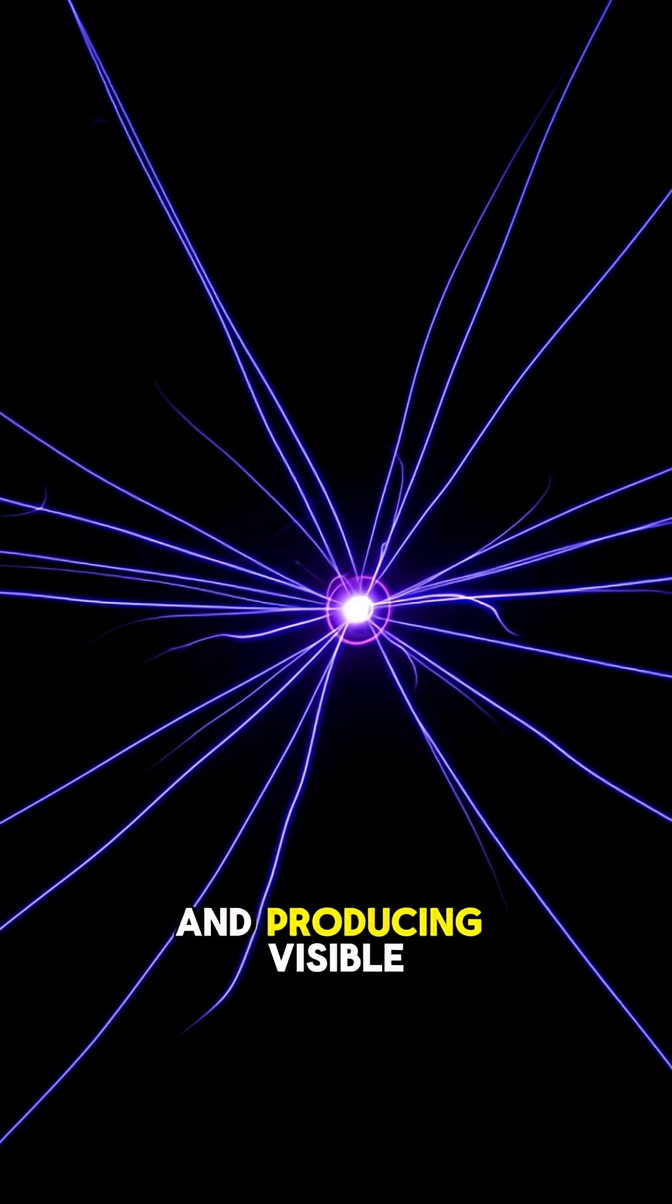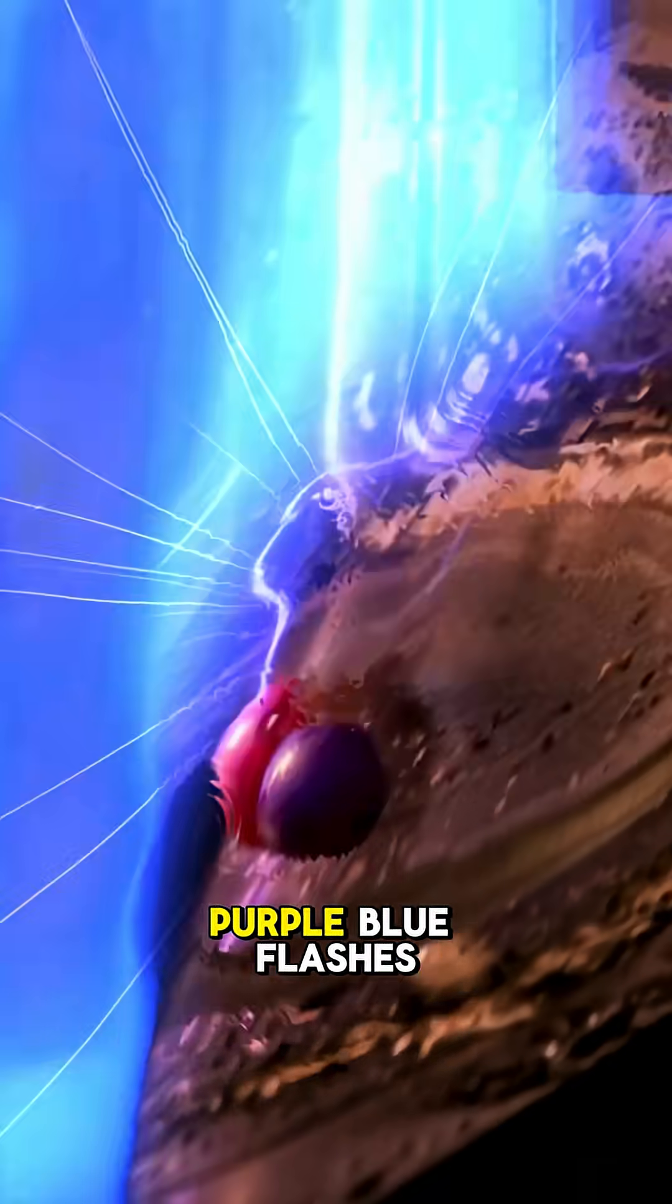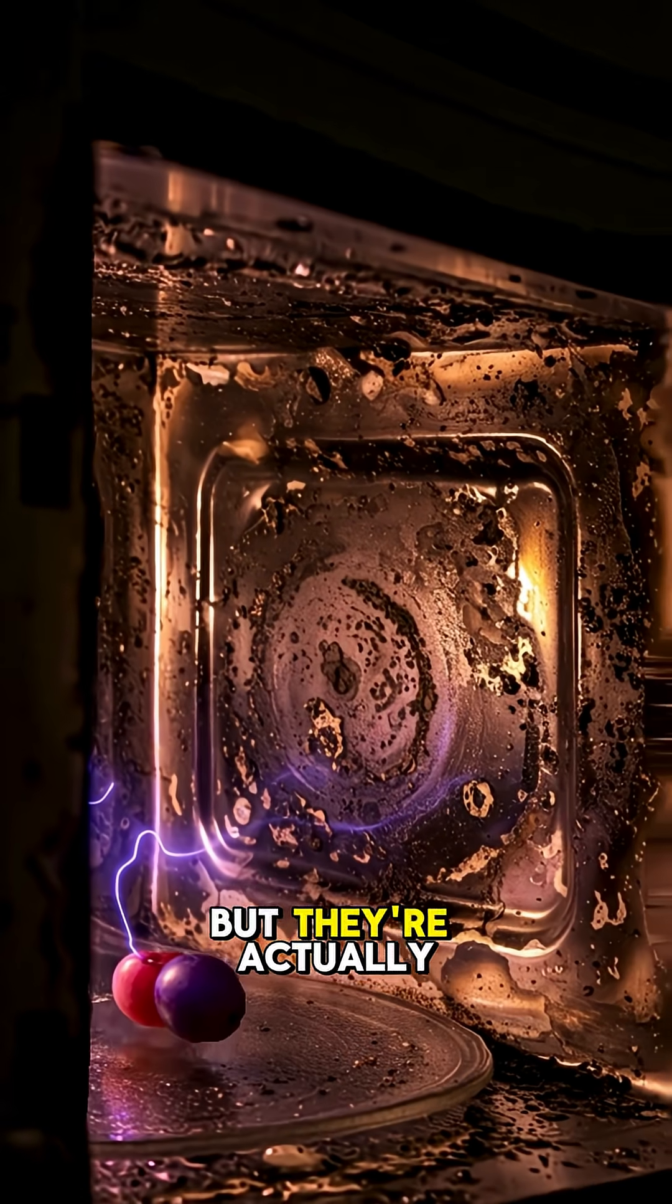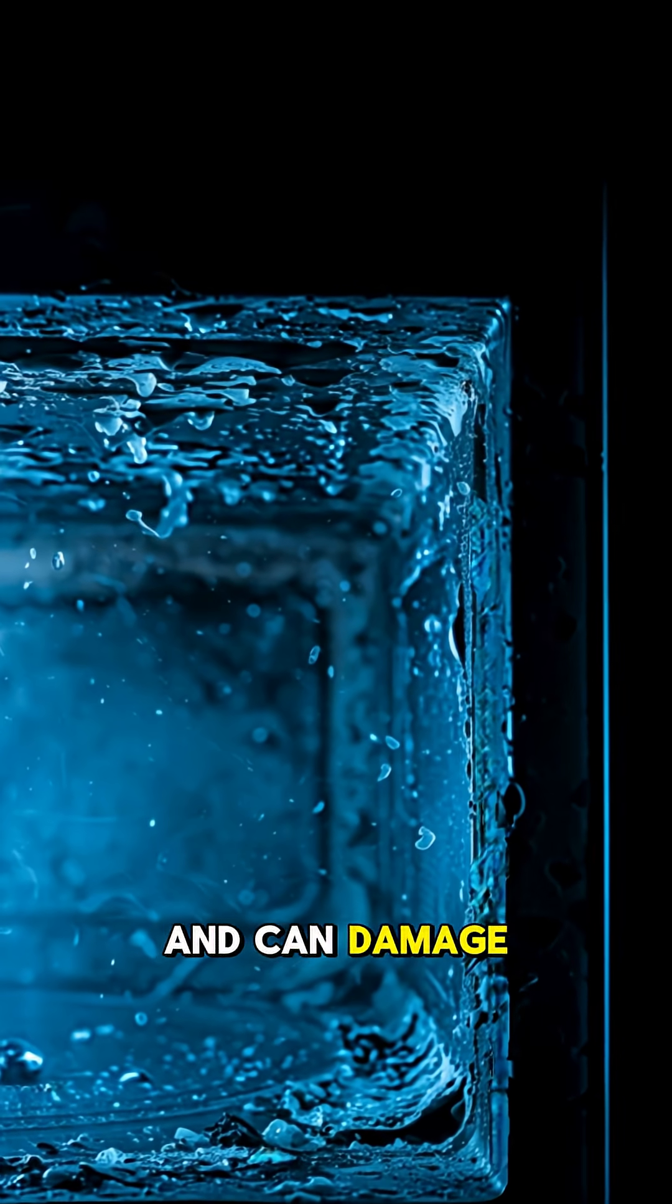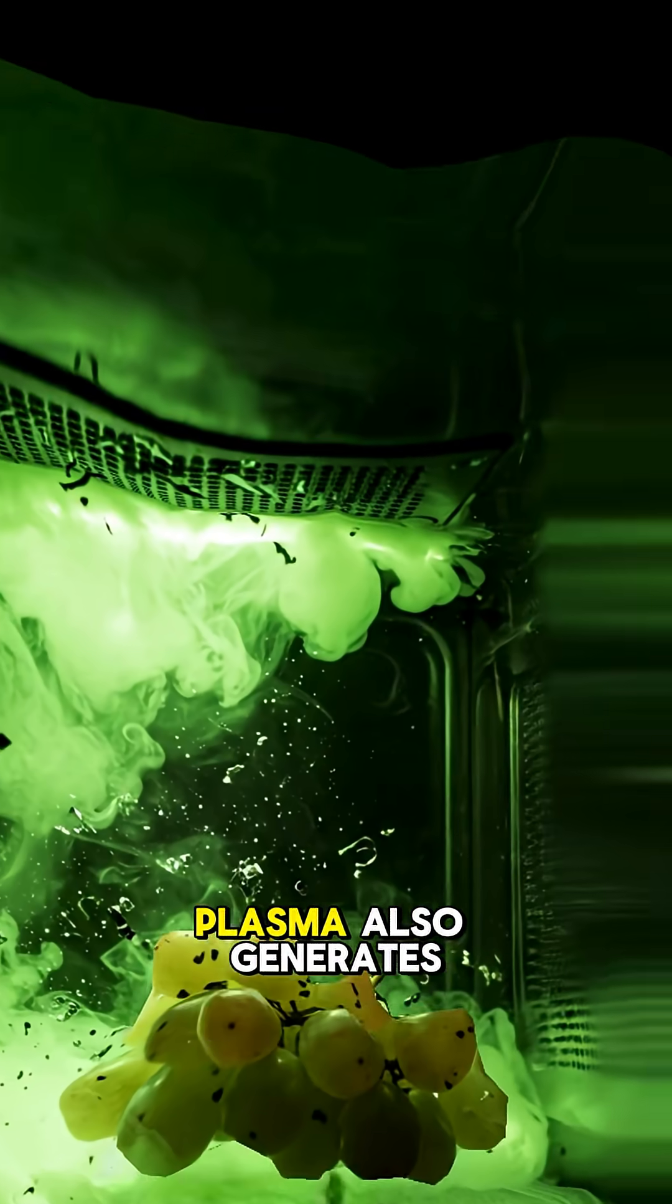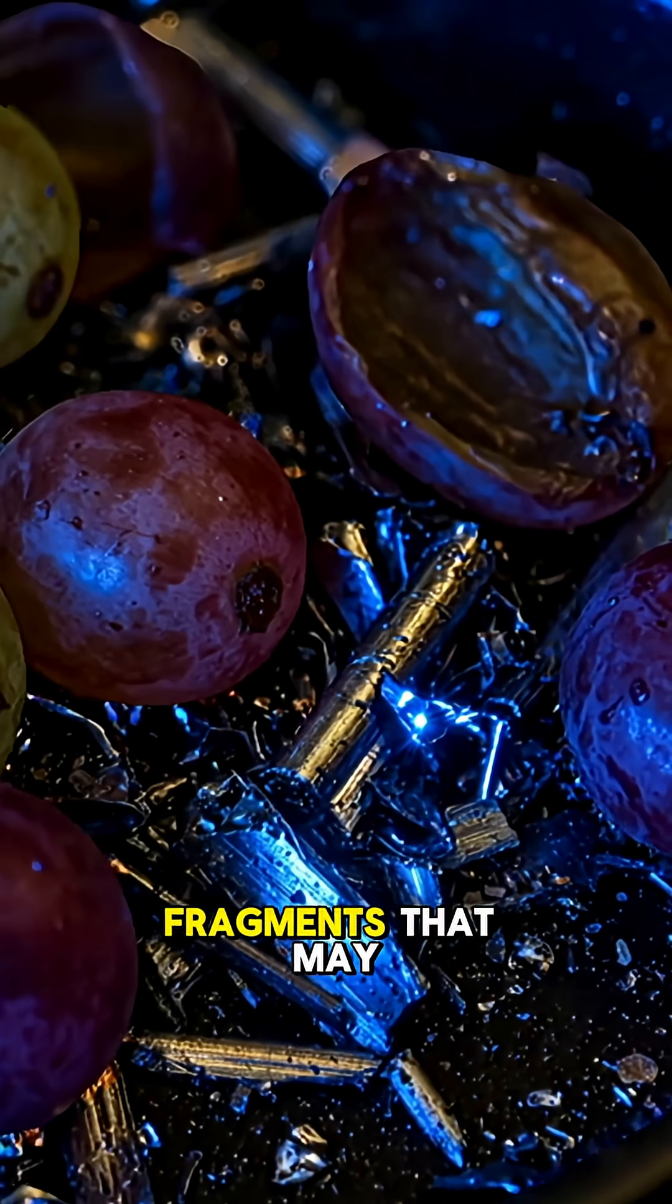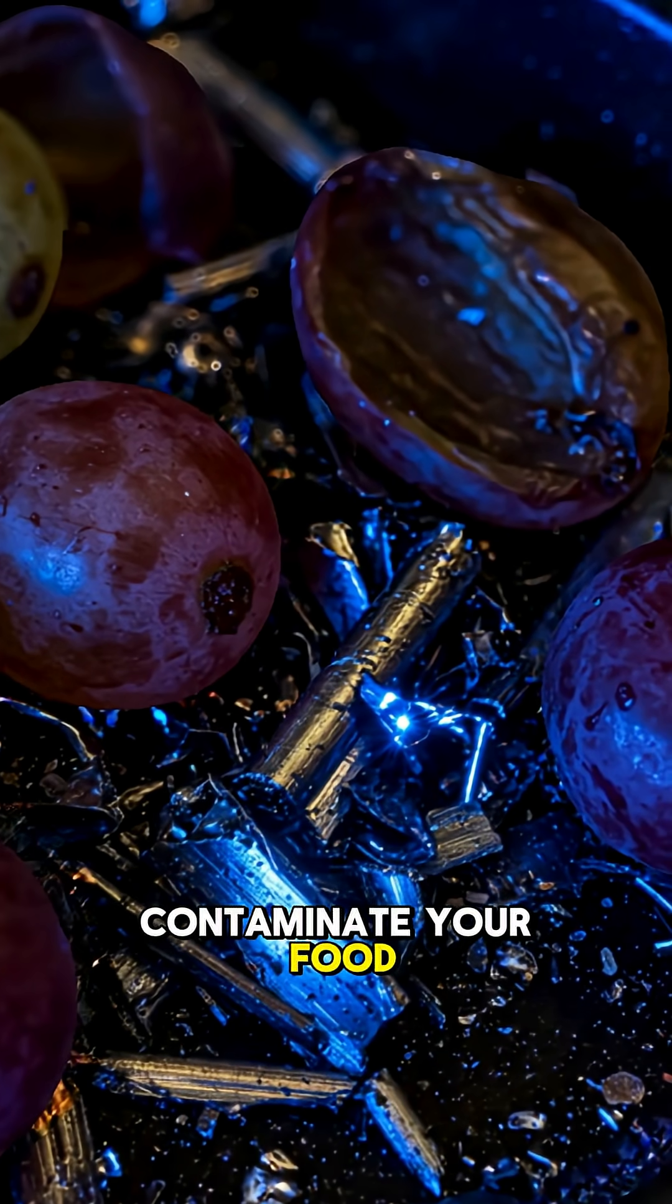ionizing the air and producing visible plasma arcs. Purple-blue flashes look cool, but they're actually super hot and can damage your microwave's interior. Plasma also generates ozone and tiny metal fragments that may contaminate your food.